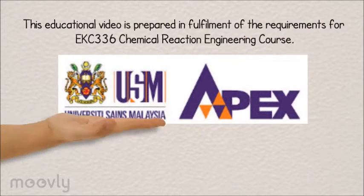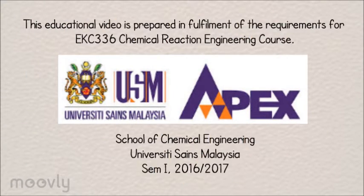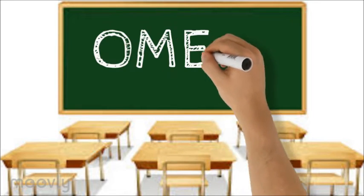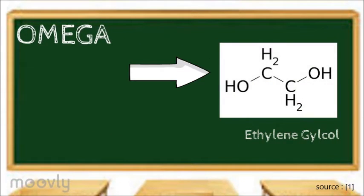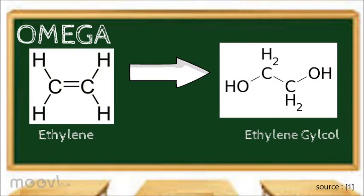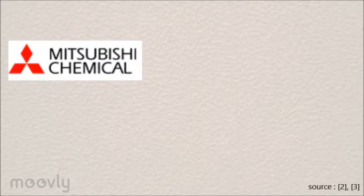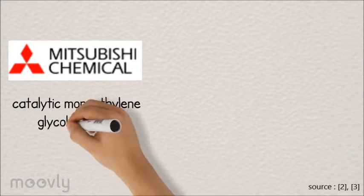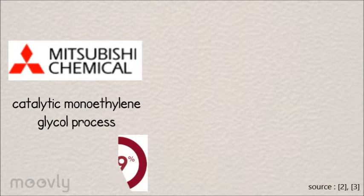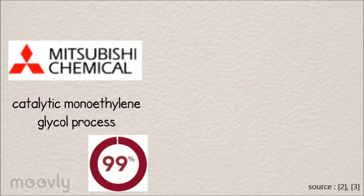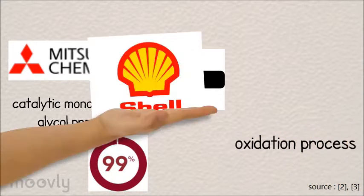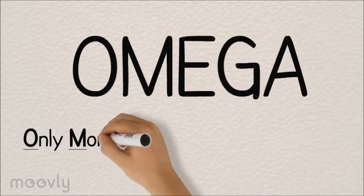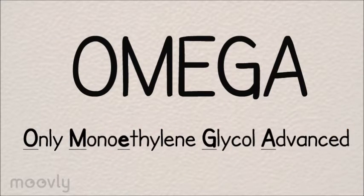Greetings everyone. The purpose of this video is to educate people about the omega process. It's an advanced chemical reaction to produce ethylene glycol from ethylene. Mitsubishi Chemical Company developed a catalytic monoethylene glycol process which gave 99% conversion. This process combined with the oxidation process by Shell is known as the omega process, which stands for Only Monoethylene Glycol Advanced.